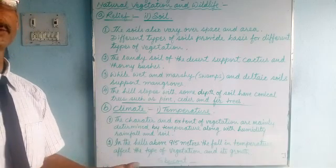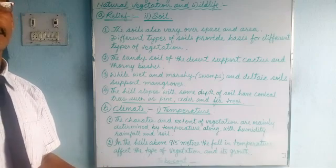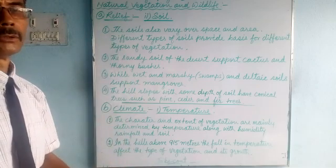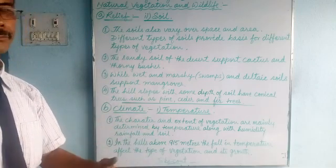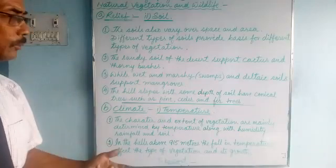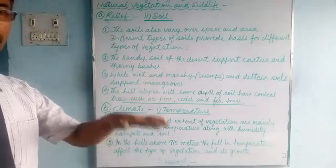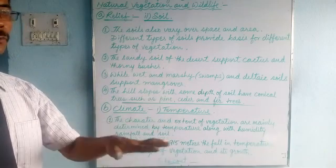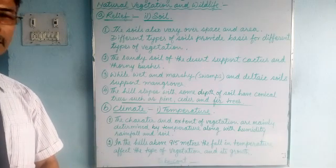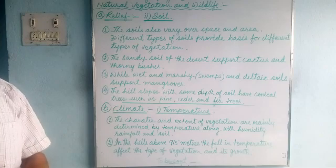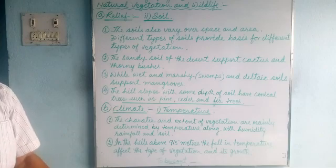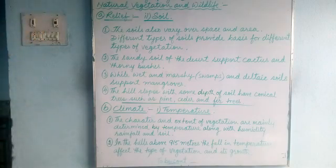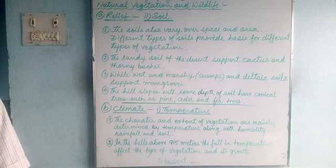At higher altitudes, you find very thin forest and trees that are not very tall — they have stunted growth and take a long time to grow. As you come down the mountain, you find increasingly thick and dense forest. At the foothills, you find dense forest with tall trees. So the character and extent of vegetation is also determined by temperature.